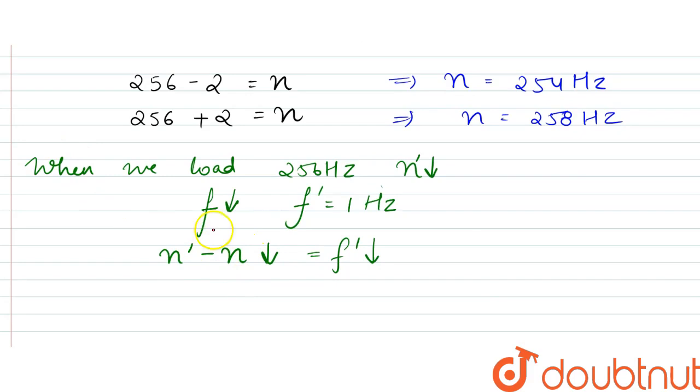Right, so if it reduces, let's say it is one hertz, right, so if it reduces to 255, that means in this case if we have 254 hertz we will get one hertz, and if we have 258 hertz, right, that time we would have greater value, right, that is 3 hertz.